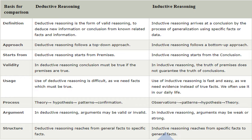Before we move into a review, let us get the key terms we are going to introduce in the next slides. These key terms are deductive reasoning and inductive reasoning. Deductive reasoning is a form of valid reasoning used to deduce new information and conclusions from related facts and information. Whereas inductive reasoning arrives at a conclusion by the process of generalization using specific facts or data. Deductive reasoning starts off with a theory, leads to a hypothesis, a pattern, and the confirmation of the theory. Whereas inductive reasoning starts off with an observation, then we observe the patterns, a hypothesis is formed, and it leads to a theory.